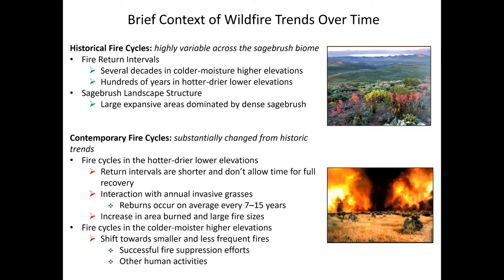Contemporary fire cycles have substantially changed from those historic trends. In the hotter, drier, lower elevations, return intervals are much shorter and don't allow time for full recovery of sagebrush communities. This is mainly due to an interaction with annual invasive grasses, where we're seeing reburns occur on average every seven to fifteen years. We've also seen an increase in area burned and large fire sizes. Fire cycles in the colder, higher moisture elevations have also changed, but not to the same extent as those at lower elevations.